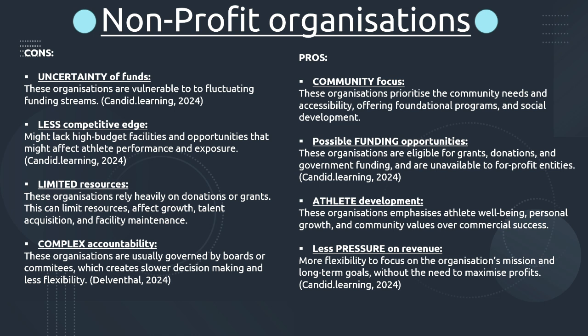Here we will be looking at non-profit organisations and the pros and cons thereof. On the left, looking at the cons, we have uncertainty of funds — probably the biggest one — as these organisations are vulnerable to fluctuating funding streams. They have a less competitive edge because they lack high-budget facilities and opportunities, which may affect their athletes' performance and exposure. They have limited resources because they rely heavily on donations or grants, which can limit resources, affect growth, talent acquisition and facility maintenance. There is also complex accountability, as these organisations are usually governed by boards or committees, creating a slower decision-making process and less flexibility.